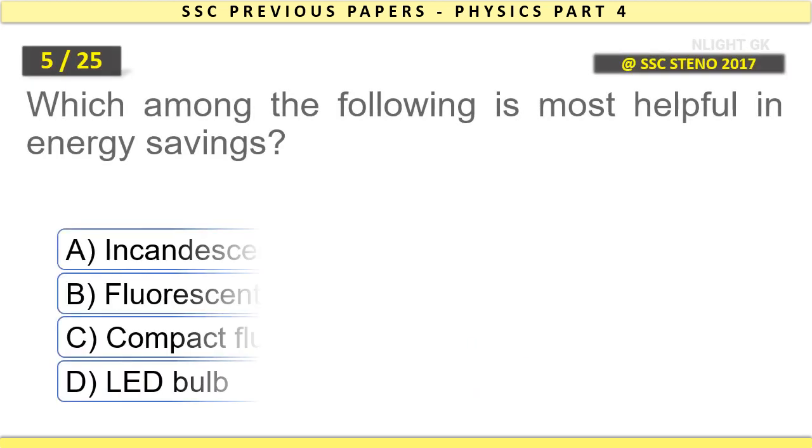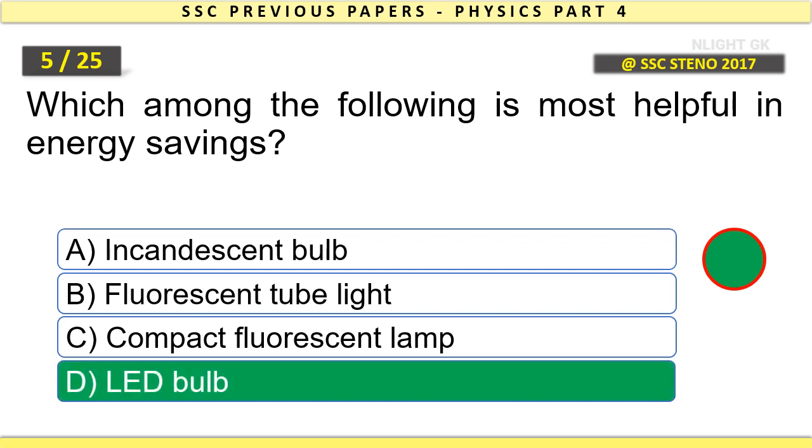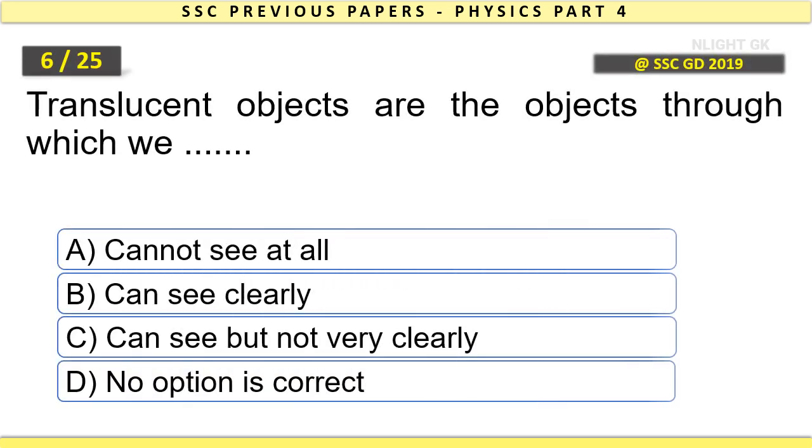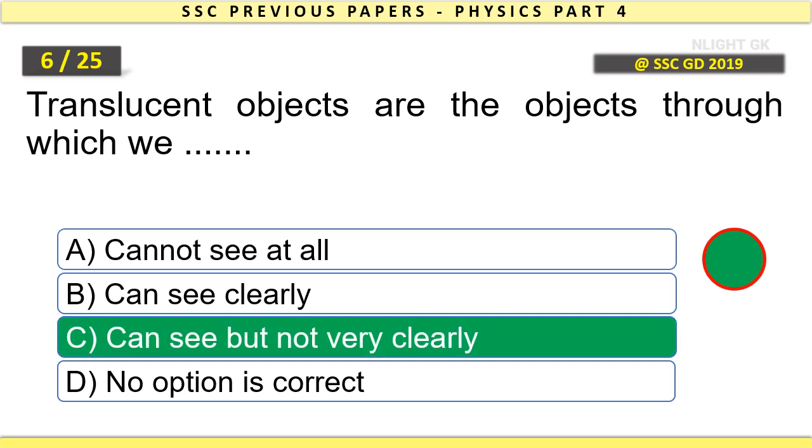Which among the following is most helpful in energy savings? LED bulb. Translucent objects are the objects through which we can see but not very clearly.